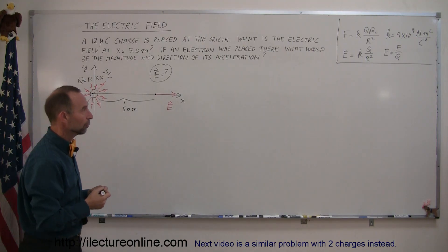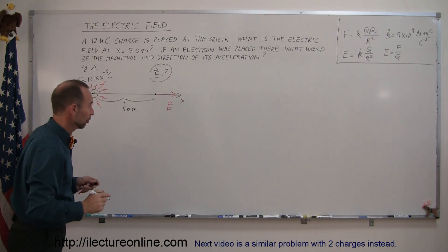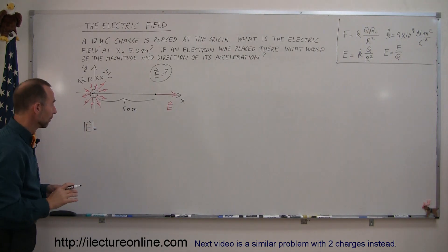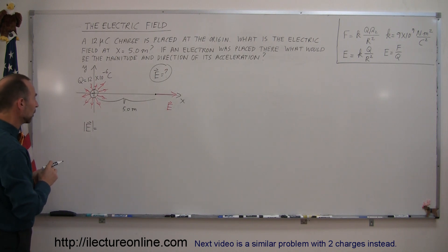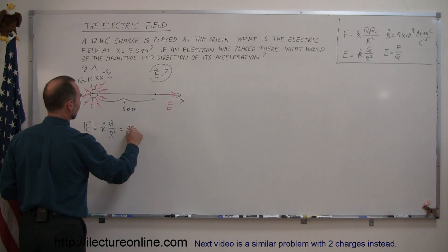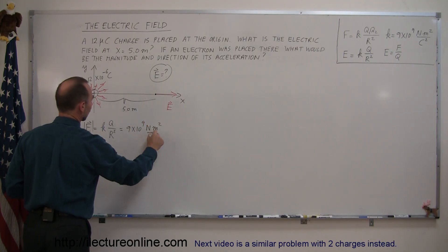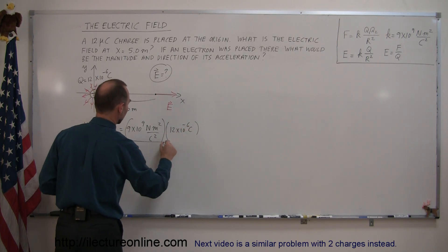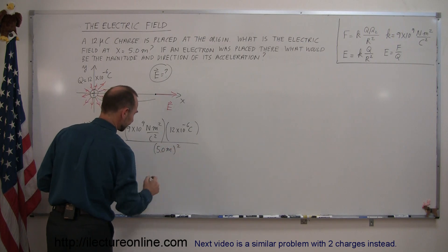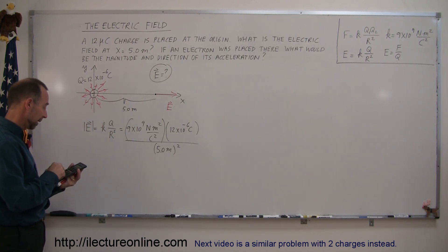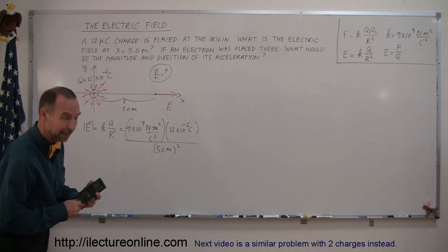We go to our equation representing the magnitude of the electric field due to the presence of a charge. E equals k times the magnitude of the charge divided by the distance squared — this form indicates we're looking for the magnitude only, not the direction. Plugging in the numbers: 9 times 10 to the ninth newton-meters squared per coulomb squared, times the charge of 12 times 10 to the minus 6 coulombs, divided by the distance of 5.0 meters quantity squared.